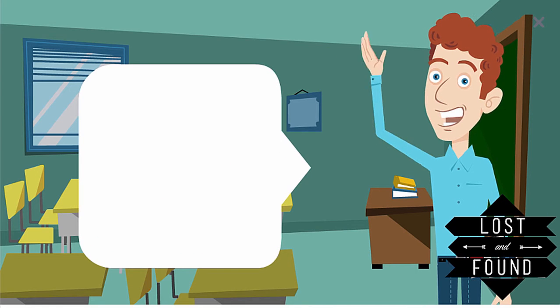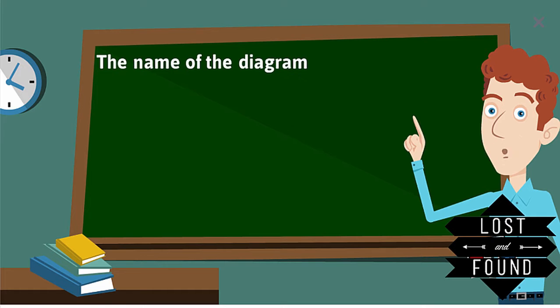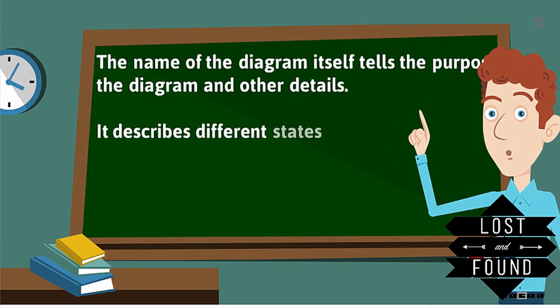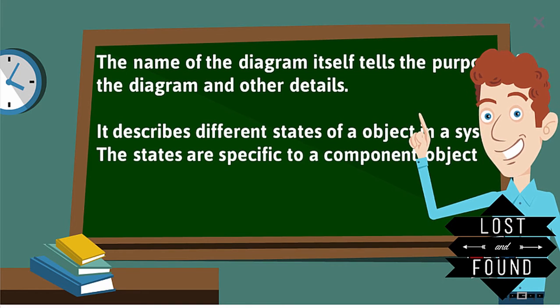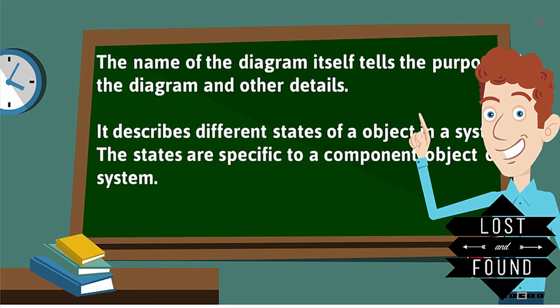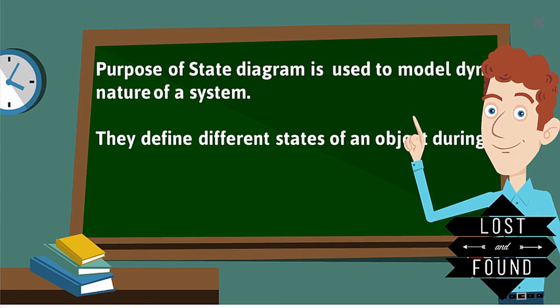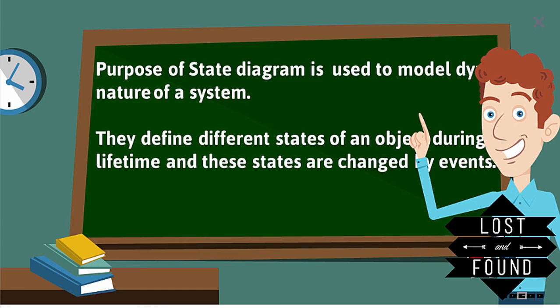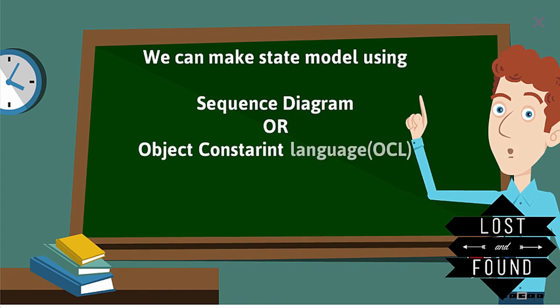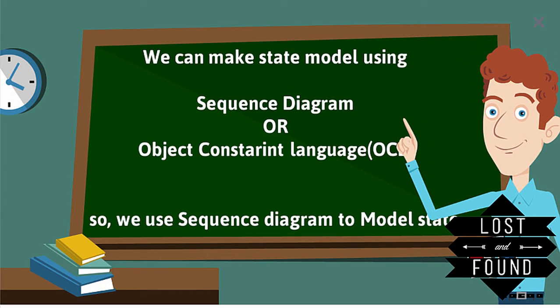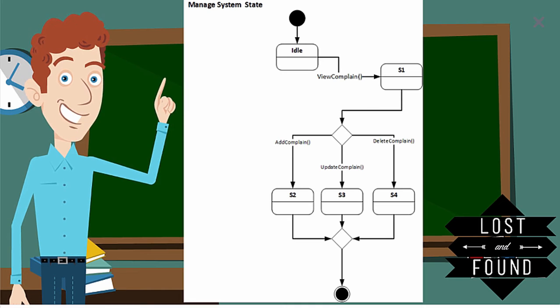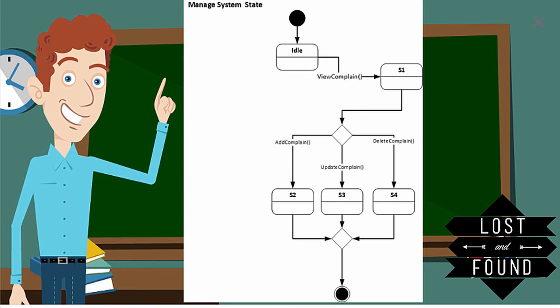After OCL, the next topic is the state model diagram. The name of the diagram indicates its purpose — it describes the different states of an object in a system. States are specific to a component or object, and the purpose of a state diagram is to model the dynamic nature of the system, defining different states of an object during its lifetime, with states changed by events. We can make a state model using a sequence diagram. In the manage system state diagram, there is first an initial node, then the first state which is the idle state.